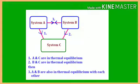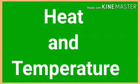Observe the picture — there are three systems: A, B, and C. From the diagram, systems A and C are in thermal equilibrium. Similarly, B and C are also in thermal equilibrium. From this we can conclude that A and B are also in thermal equilibrium with each other. From these activities we can define heat and temperature.